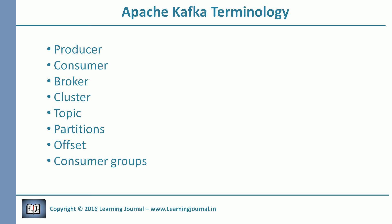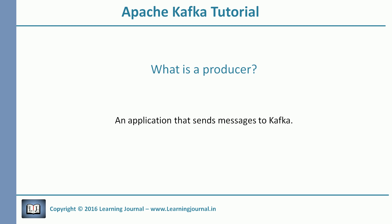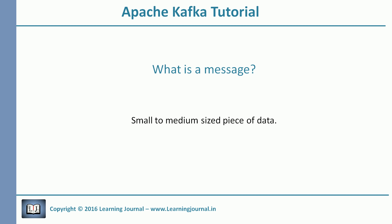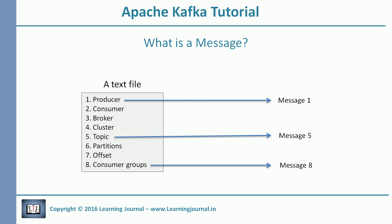The first item is the producer. The producer is an application that sends data, which we will call a message or a message record — ultimately a small to medium size piece of data. The message may have different meaning or schema for us, but for Kafka it is simply an array of bytes. For example, if I want to send a file to Kafka, I will create a producer application and send each line of the file as a message.